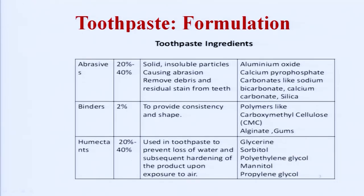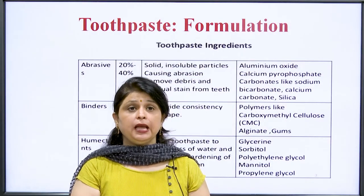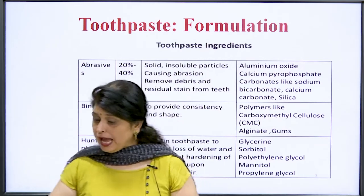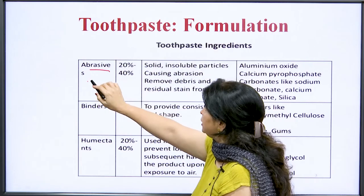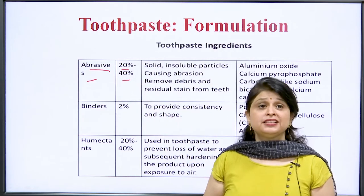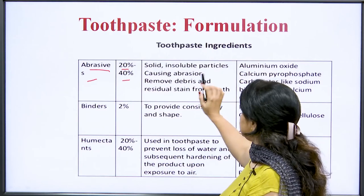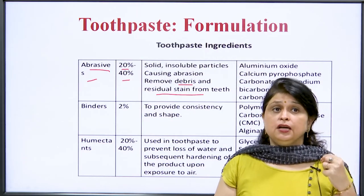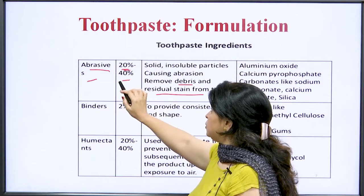After defining toothpaste, the next part is formulation — what ingredients we can add. The most common agent we need to add is abrasives. 20 to 40 percent of our toothpaste contains abrasive agents — mainly solid insoluble particles causing abrasion — which remove debris and reduce stains from the teeth. Examples of abrasive agents include aluminium oxide, calcium pyrophosphates, carbonates like sodium bicarbonate, calcium carbonate, and silica.